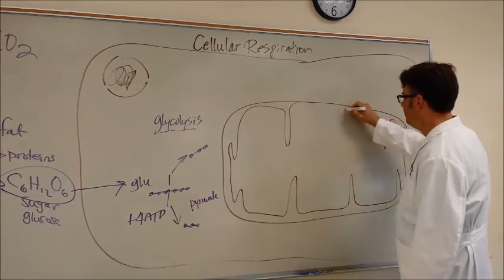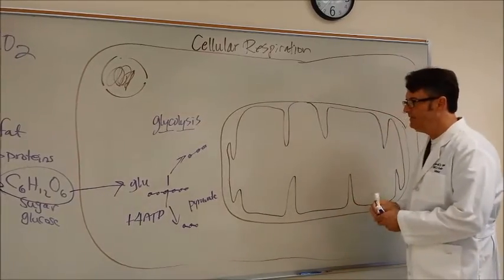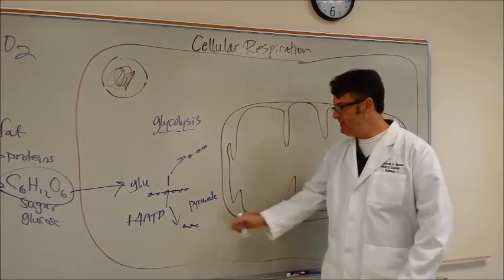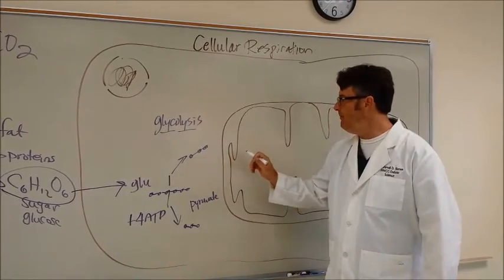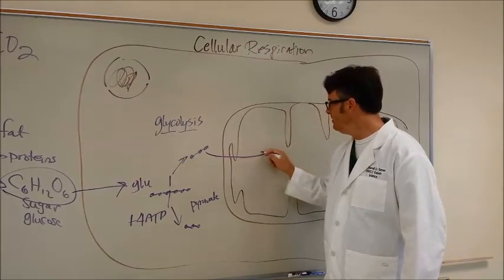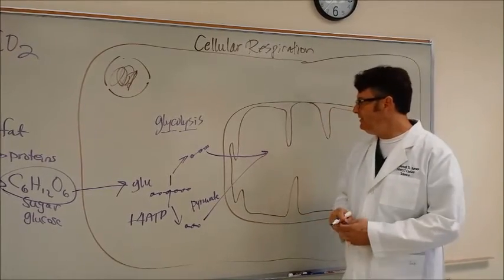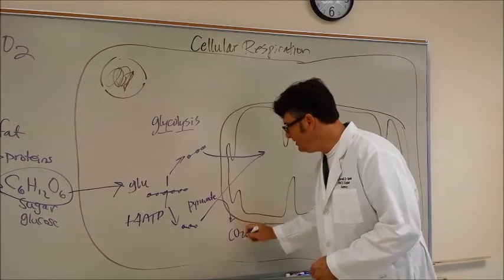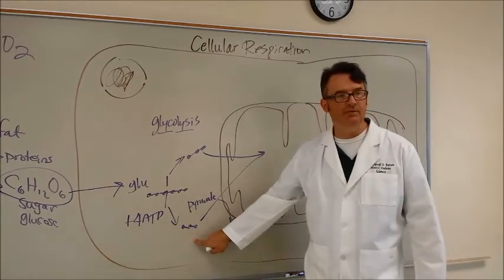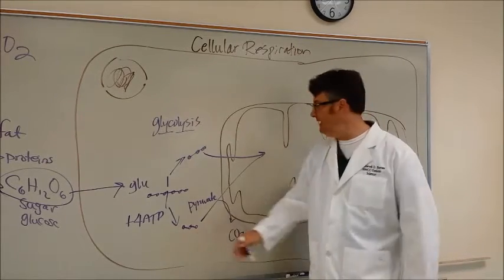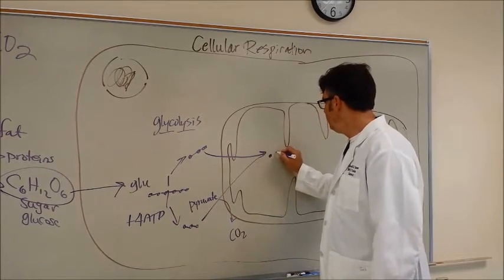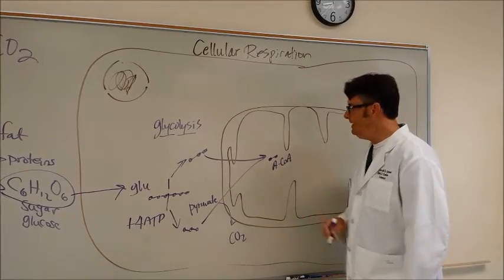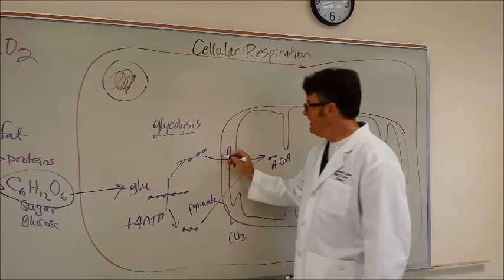These little infoldings are called cristae inside of the mitochondrion. What happens is that these three carbon fragments get pulled into the mitochondrion and they have carbon dioxide cleaved off of them. There's one carbon going off of that one. So if we had three and we took one away, how many would we have left? We would only have two. This molecule is called acetyl coenzyme A. We're going to do the same thing with this one.